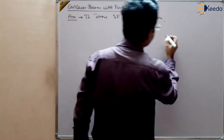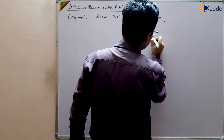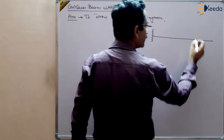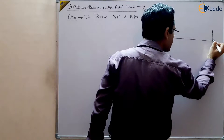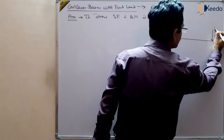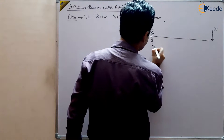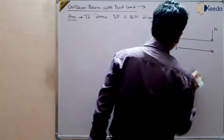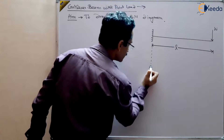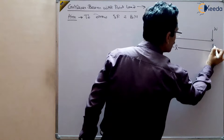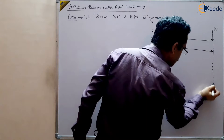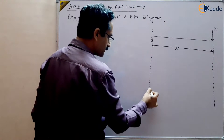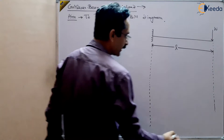We have a cantilever beam — it is fixed at one end, the other end is free, and suppose the point load W is at this free end. It has length L. We want to draw the shear force and bending moment diagram for the entire length.